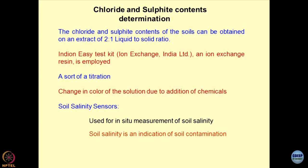There are ion exchange kits available in the market, similar to those used for checking urine samples. Whether it is biochemistry or soil chemistry, this is essentially a titration. By knowing the number of drops of ion exchange resin added to the solution, you can compute the concentration of the contaminants. A change in the color of the solution is a good identification of what type of chemicals and what concentration is present.